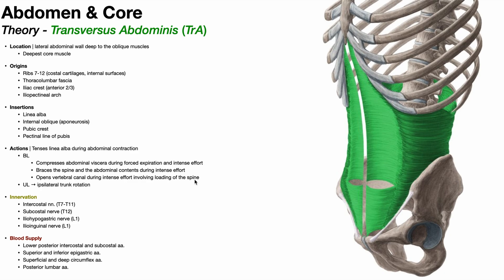Like the other core muscles, the transversus abdominus gets segmental innervation. Motor innervation is via the intercostal nerves and the subcostal nerve, and it also receives sensory innervation from the iliohypogastric and ilioinguinal nerves. Blood supply is via the lower posterior intercostal and subcostal arteries, the superior and inferior epigastric arteries, the superficial and deep circumflex arteries, and the posterior lumbar arteries.